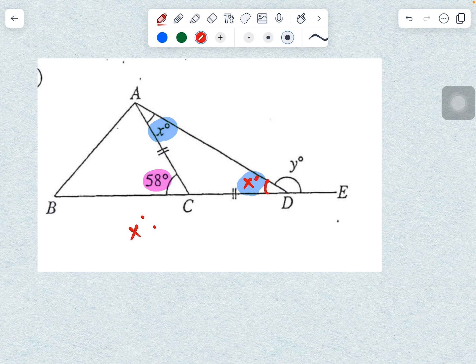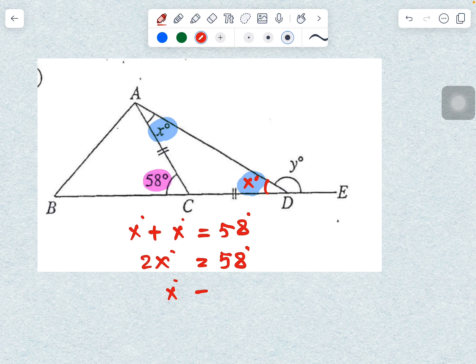So, x-degree plus x-degree equals 58-degree. And then, 2x-degree equals 58-degree. So, x-degree equals 29-degree.